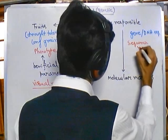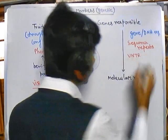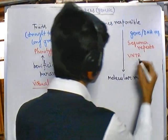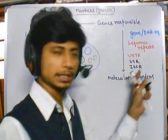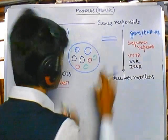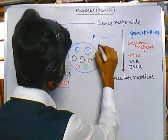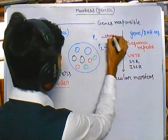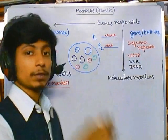Types of repeats we can get include VNTRs (variable number tandem repeats), microsatellites, minisatellites, SSRs (simple sequence repeats), and ISSRs (inter simple sequence repeats). For example, consider a DNA sequence in plant one where a repeat of 'CA' repeats three times, but in plant two it repeats only two times, and in another plant it repeats twenty times.